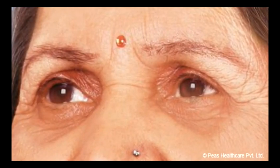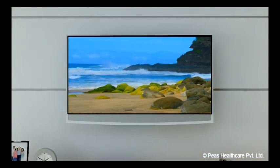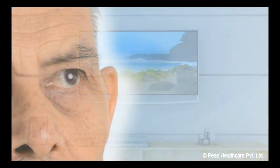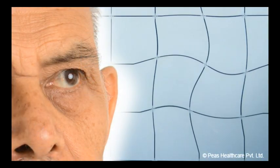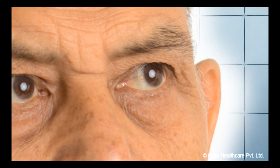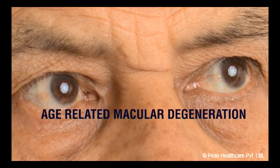Do you find it difficult to recognize the face of an individual or while watching television the images look blurred? Have you noticed that straight lines of the tiles are appearing wavy? All these can be the common symptoms of an aging eye known as age-related macular degeneration.